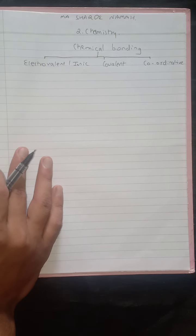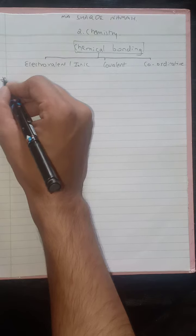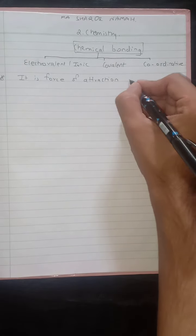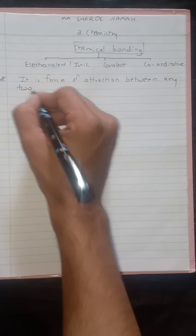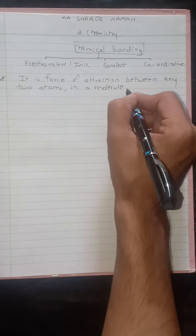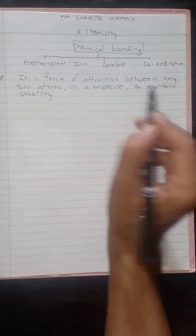Before starting the bonds directly, let's come to the definition of a chemical bond. A chemical bond is a force of attraction between any two atoms in a molecule to maintain stability.